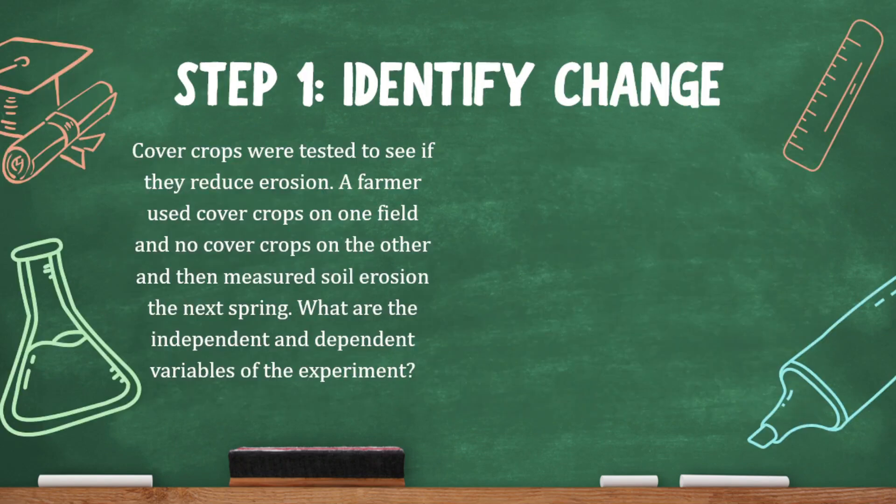Let's look at an example. Cover crops were tested to see if they reduce erosion. A farmer used cover crops on one field and no cover crops on the other, and then measured soil erosion the next spring. What are the independent and dependent variables of the experiment?